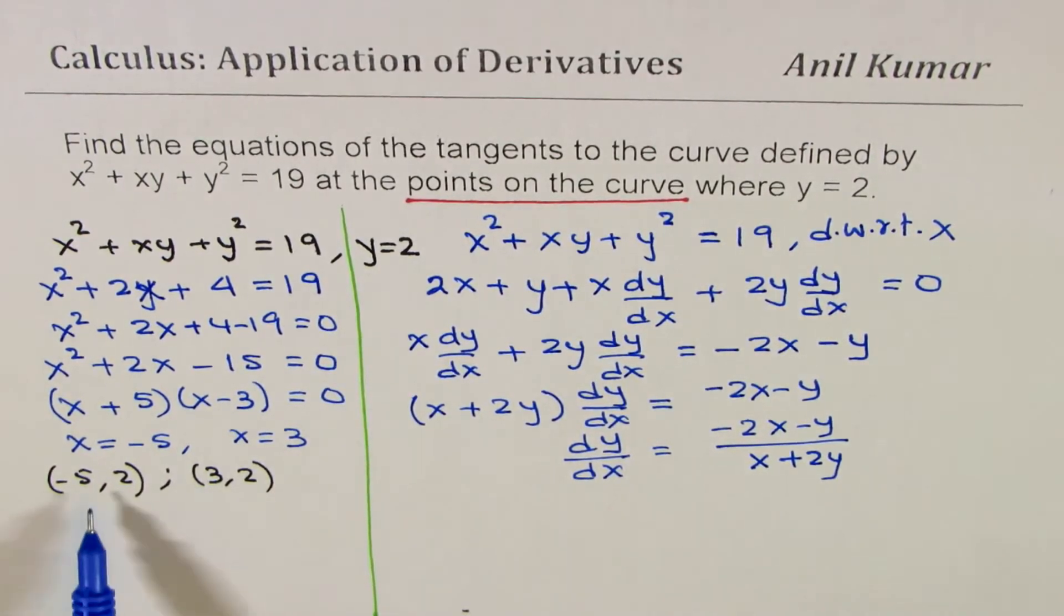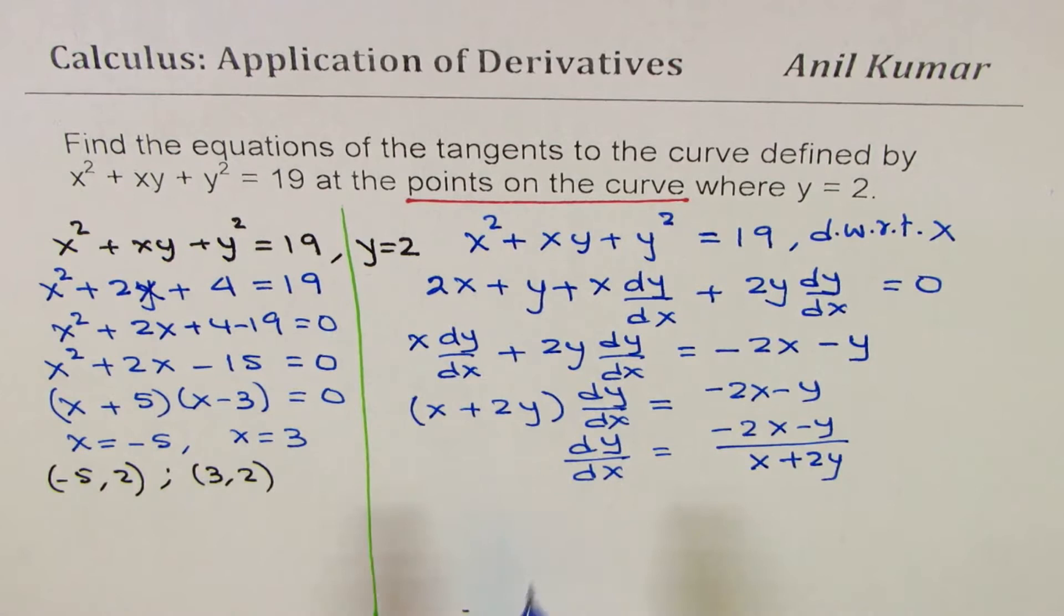Now, for these two points, we'll get two different slopes. Based on those two slopes, we get two different equations of tangents. So, that's the whole idea. So, let's find derivatives for each point. Let's work one by one.